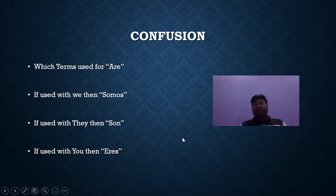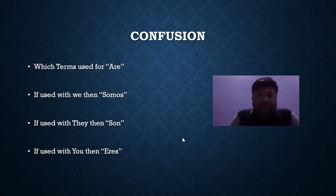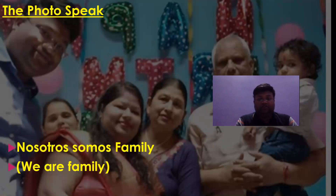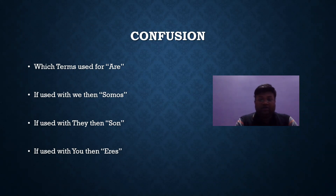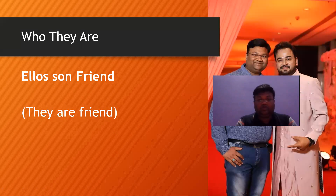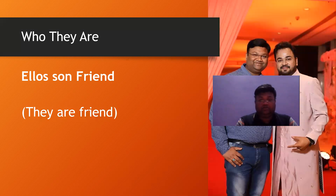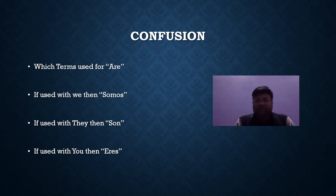There may be confusion about the previous slides regarding 'somos', 'son', 'soy', 'eres', and 'es' — all are forms of the verb 'ser' meaning 'to be'. I will try to distinguish these terms. If used with 'we' (nosotros), we say 'somos'. If used with 'they' (ellos), we use 'son'. If used with 'you' (tú), we use 'eres'. Different words are used with different pronouns.